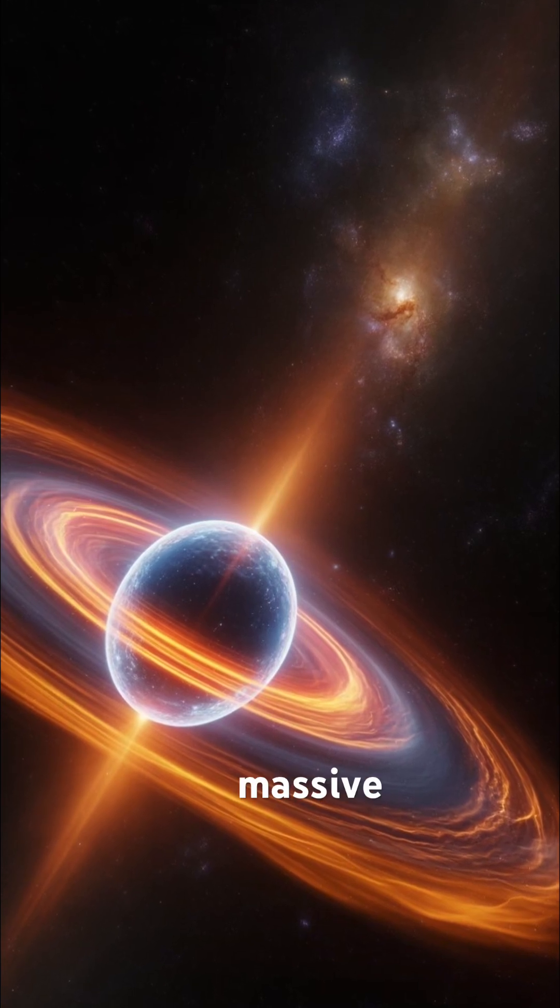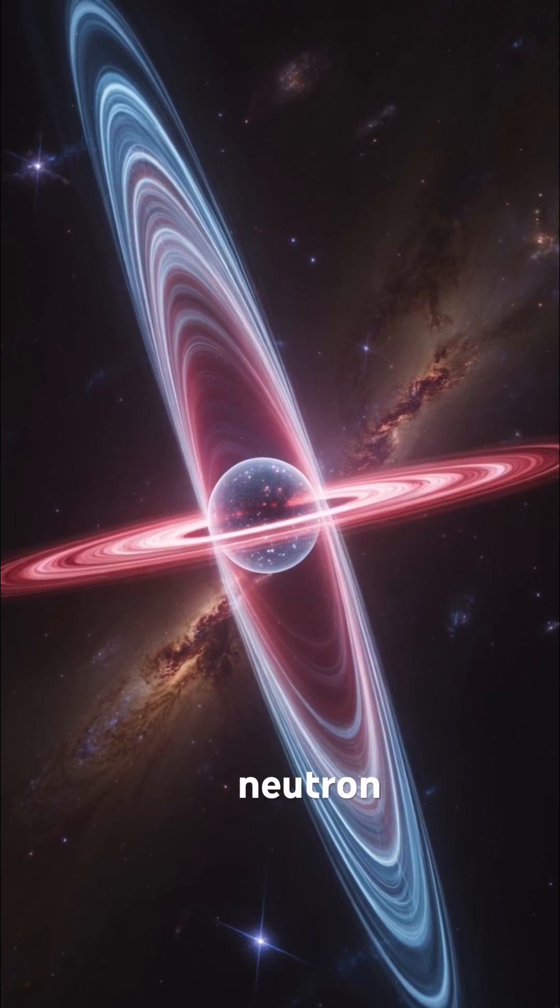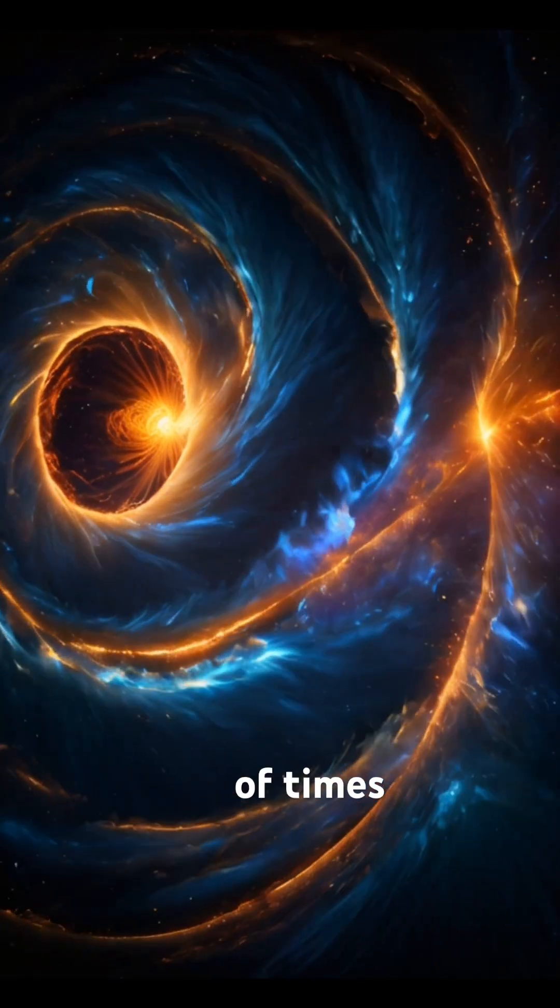Before collapse, that massive star might have rotated once every few days. After collapsing into a tiny neutron star, it spins hundreds of times per second.